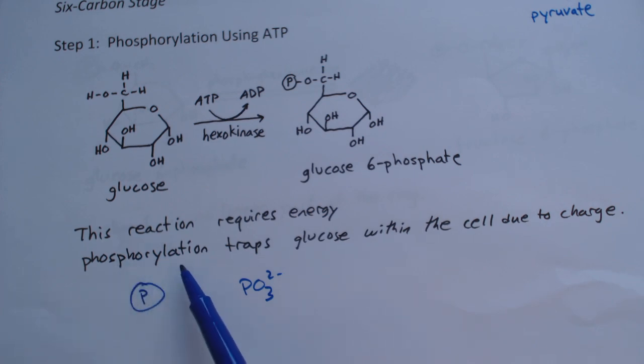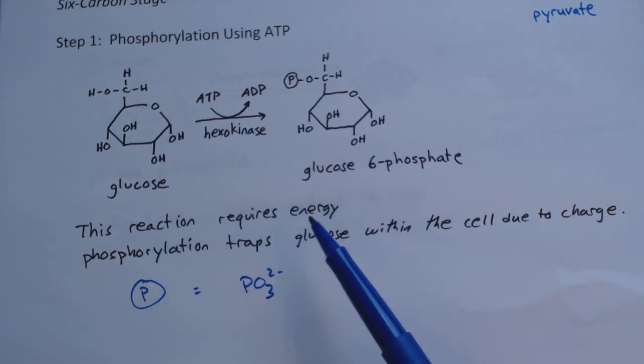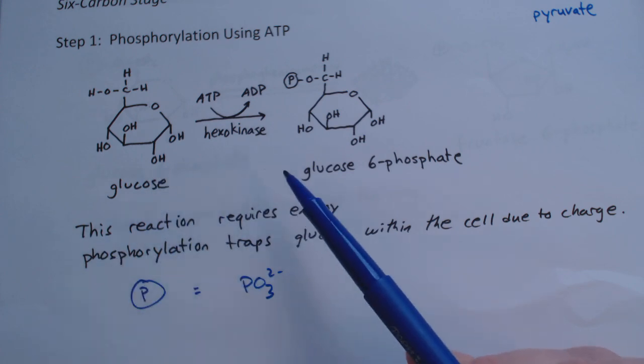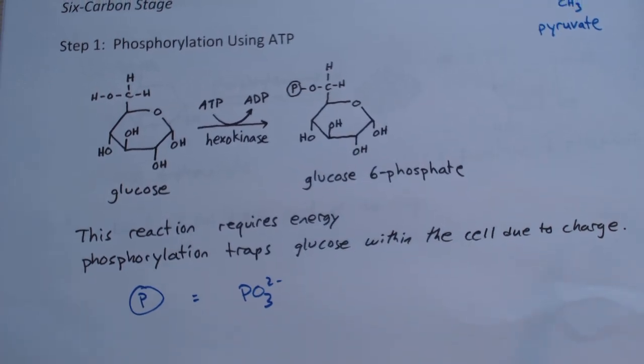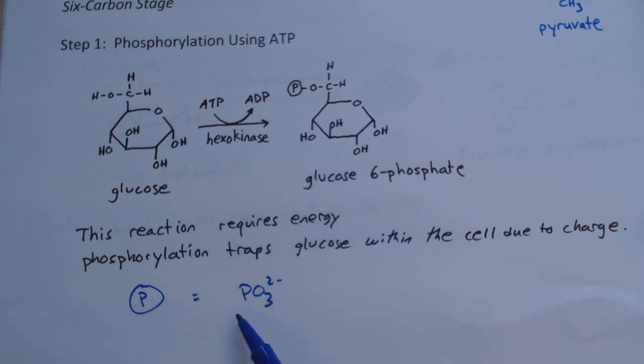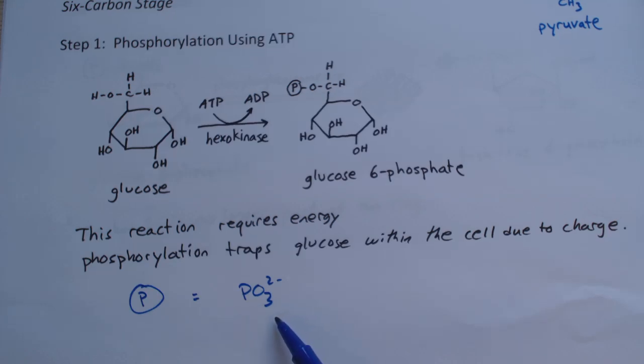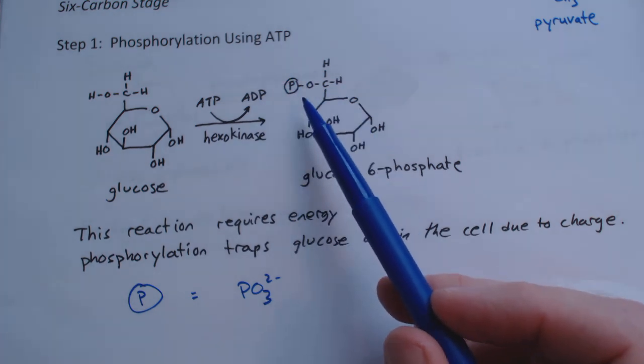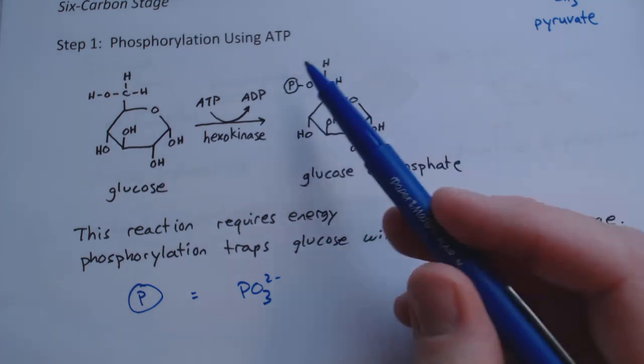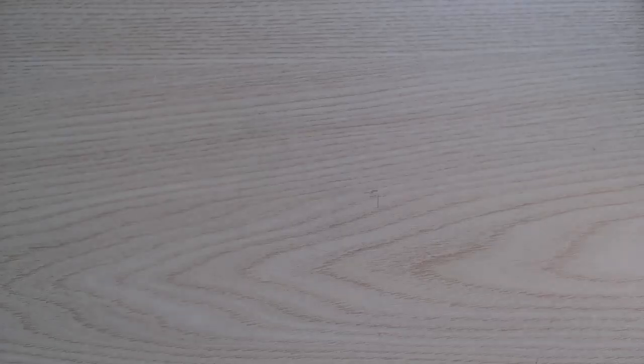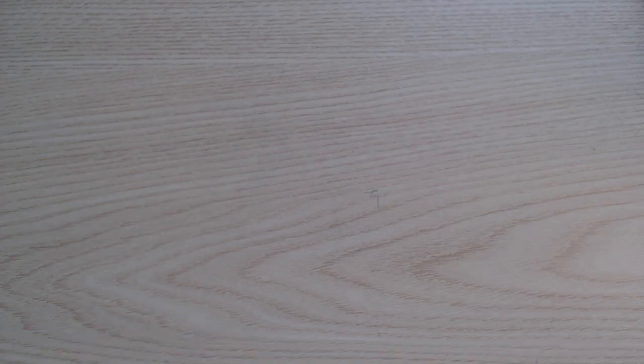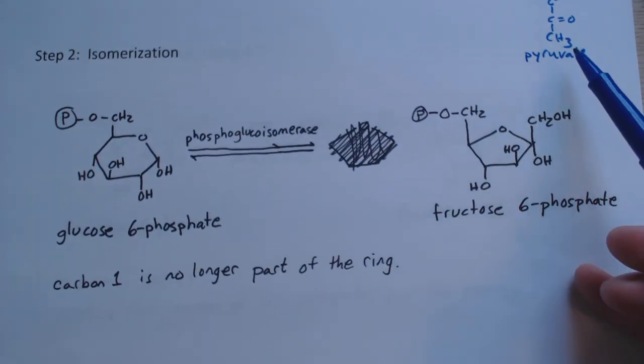The main purpose of this phosphorylation is to trap the glucose within the cell due to its charge. Glucose is an important biomolecule that can easily shift back and forth through the cell membrane. By attaching the phosphate, which is this piece with a circle around it, it creates this charge that makes this whole species very difficult to move through the cell membrane.